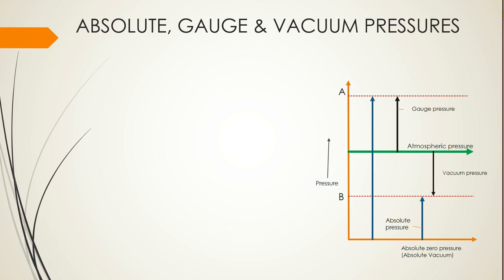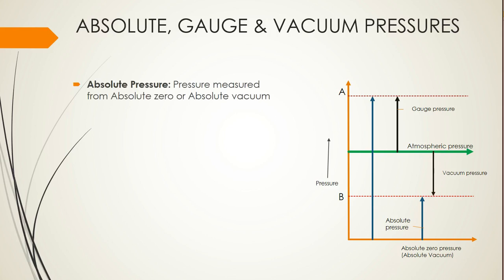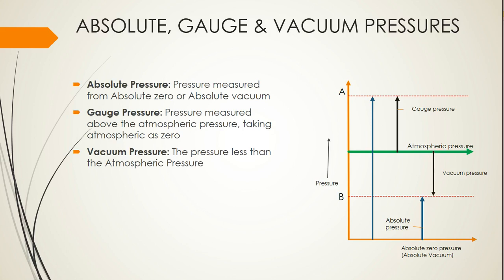For point B, the pressure is below atmospheric pressure — that type of pressure is known as vacuum pressure. To summarize: any pressure measured from absolute zero is absolute pressure; pressure measured above atmospheric pressure is gauge pressure; and pressure below atmospheric pressure is vacuum pressure. Gauge pressure uses atmospheric pressure as zero. Vacuum pressure is a negative pressure below atmospheric.